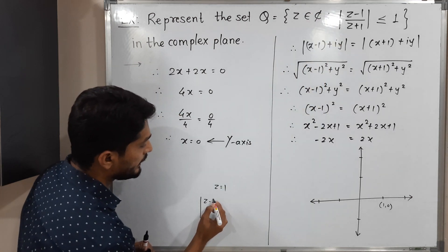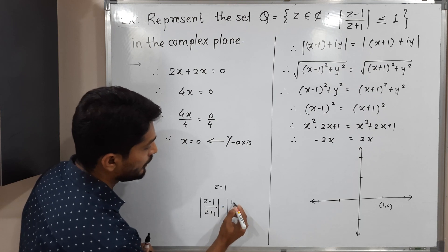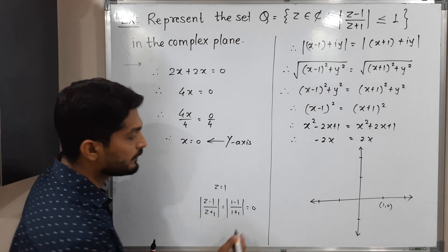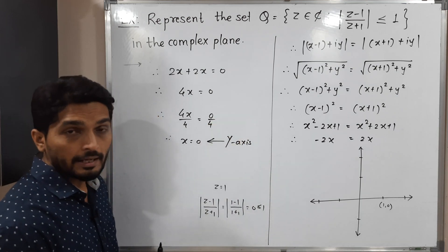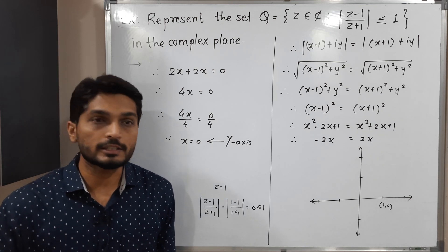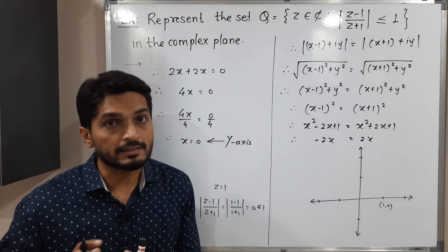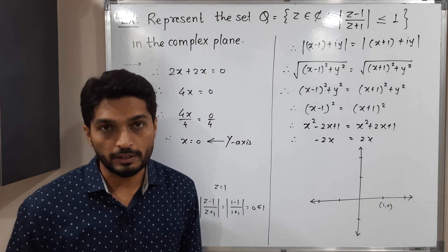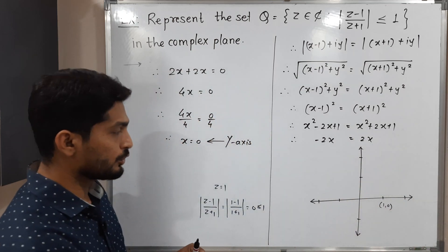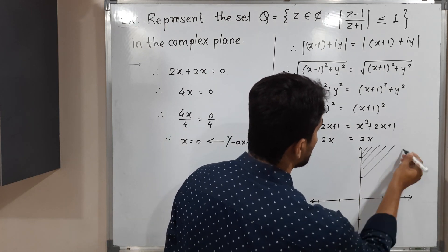Substituting Z equals 1 into mod (Z minus 1) upon (Z plus 1): we get (1 minus 1) upon (1 plus 1) which is 0, and 0 is less than or equal to 1. So the condition is satisfied. That means the point (1, 0) lies in the required region, confirming the right-hand side of the Y-axis is the required region.